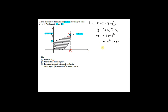Bringing all terms to one side: x squared minus 4x plus 4, bring the x over to get negative x, and bring the 4 over to get negative 4, equal to 0. This gives x squared minus 5x equal to 0. Factorizing: x multiplied by x minus 5 equal to 0, so x equal to 0 or x equal to 5. Therefore x equal to 0 is point A and k equal to 5.